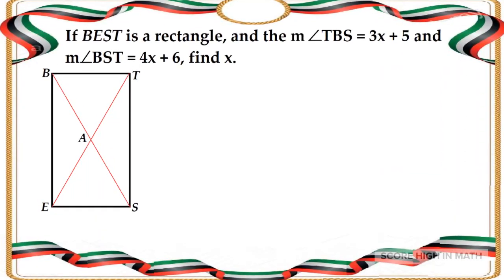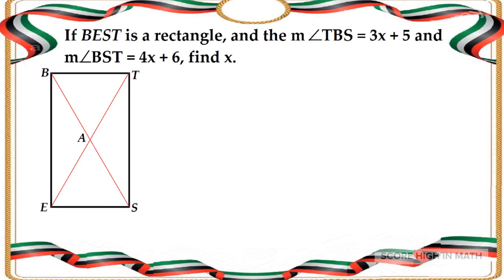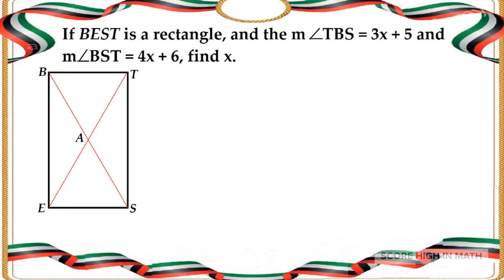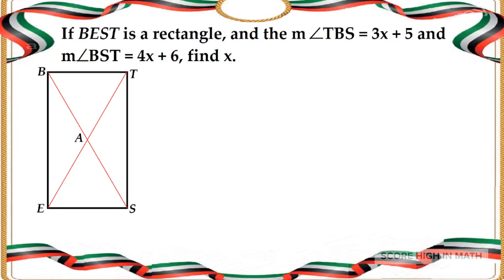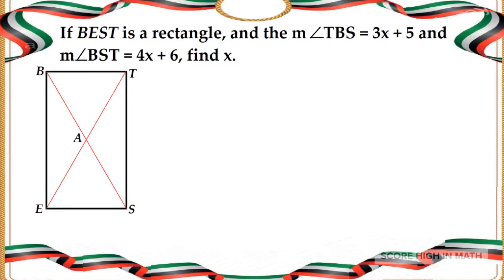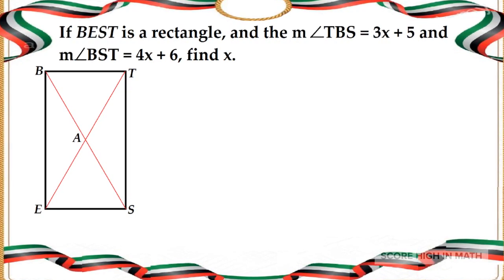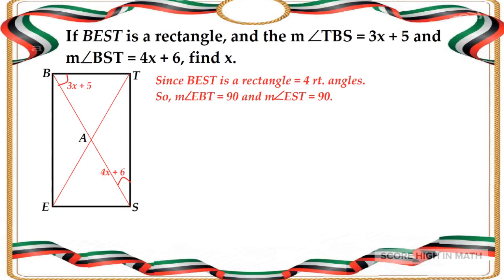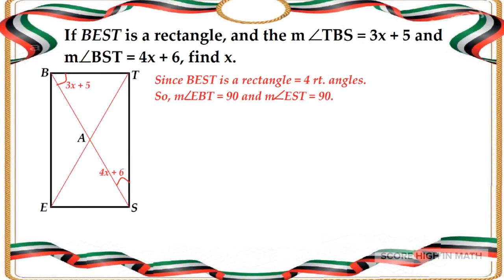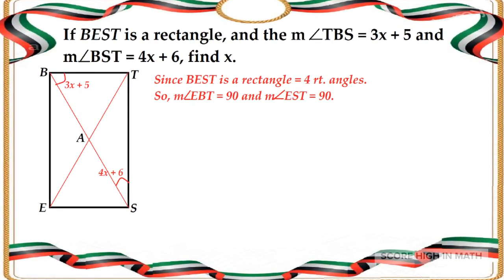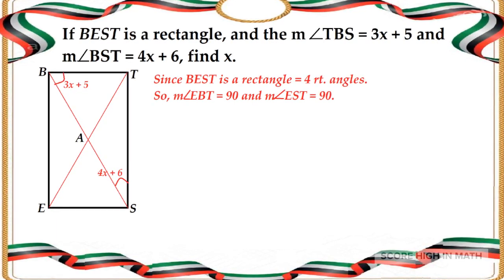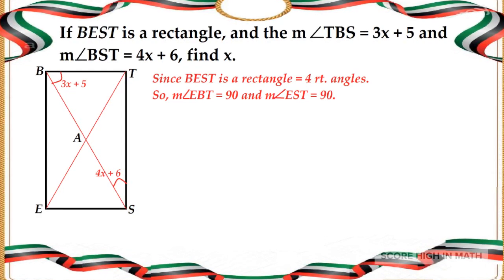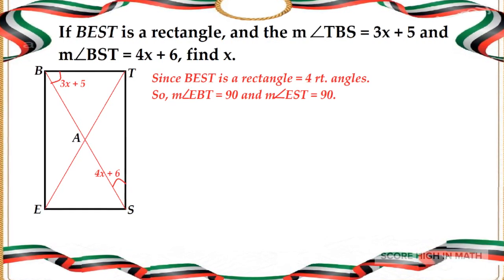What about this example? If BEST is a rectangle, the measure of angle TBS is equal to 3x plus 5, and the measure of angle BST is equal to 4x plus 6. Find x. Since BEST is a rectangle, therefore we have four right angles. So the measure of angle EBT is equal to 90 and the measure of angle EST is also equal to 90.